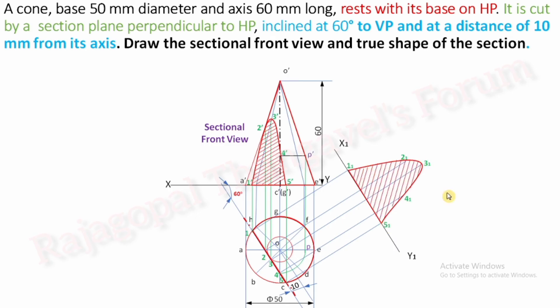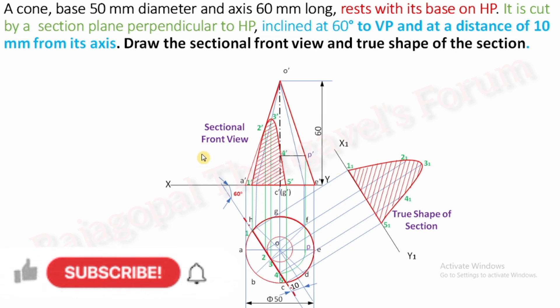All section plane cutting points have now been converted onto the plane of projection parallel to the section plane. Join all the points with a smooth curve and apply hatching. This is the true shape of the section. The sectional front view and true shape of the section are now complete.